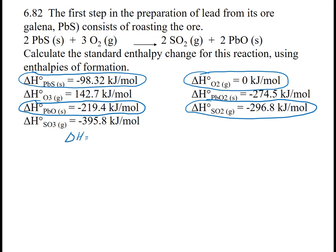For my products, in big parentheses, I have 2, so I want 2 times the delta H of formation of SO2, plus, again, a coefficient of 2, so 2 times the delta H of formation of PbO,